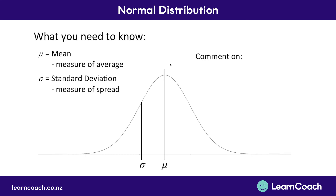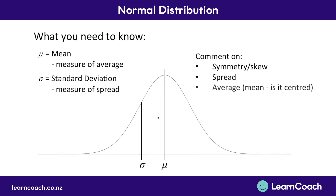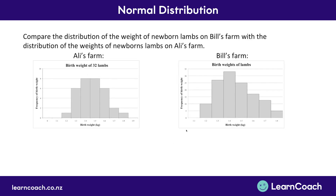You also need to be able to comment on: firstly, symmetry — is it a beautiful symmetrical bell curve, or has it been skewed? Remember, we talk about skew as which end the longer tail is on. We talk about spread with reference to the standard deviation. And the average is the mean — that very center point — is it in the middle or is it to the side? In this case it's in the middle. Now let's look at a question.